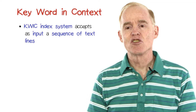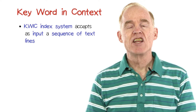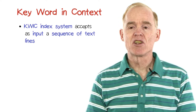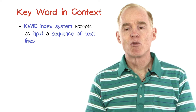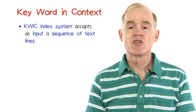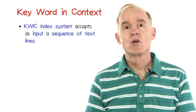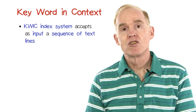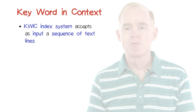A quick index system accepts as input a sequence of text lines. Each line is a sequence of words, and each word is a sequence of characters. You can think of the lines as containing titles — something like titles.